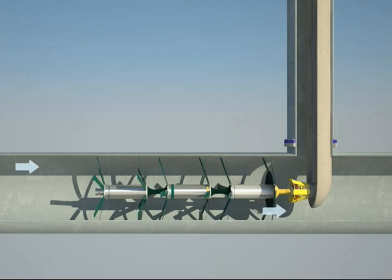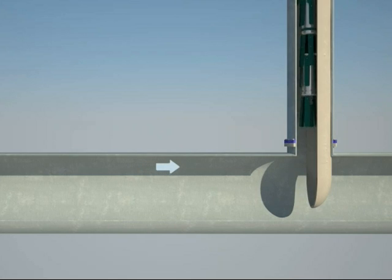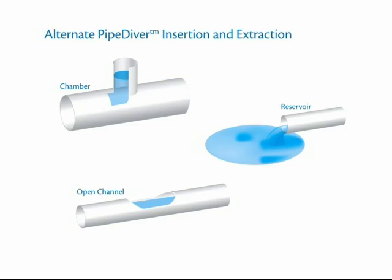Once secure, the tool is removed from the pipeline and the inspection has been completed. The versatile tool can also be inserted into the pipeline via a chamber or open channel and extracted from a reservoir depending on local site conditions.